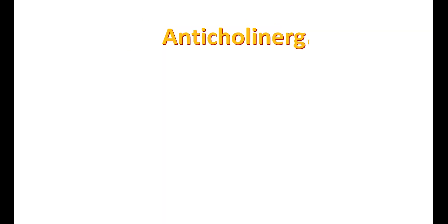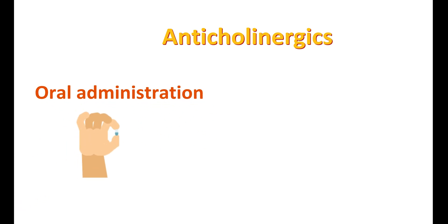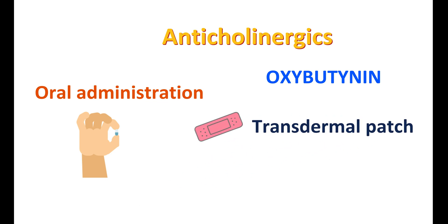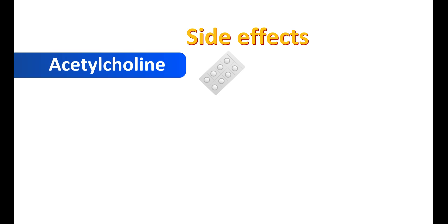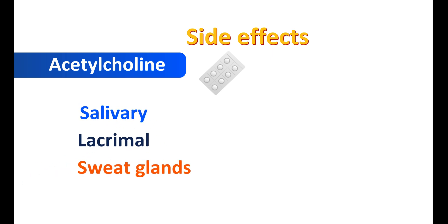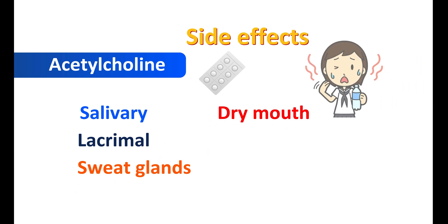Most anticholinergics are available for oral administration and can be taken by mouth. Oxybutynin is also available as a transdermal patch and topical gel. Even though these medicines differ by dose, they work in an equal way. The side effects are mild and well tolerated. Since acetylcholine is essential for inducing secretion from glands like the salivary, lacrimal, and sweat glands, anticholinergics cause a few side effects. Dry mouth is the most common side effect due to inhibition of salivary secretion.